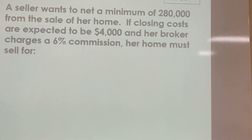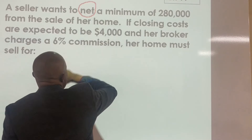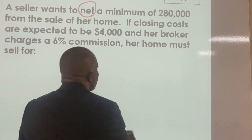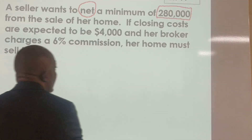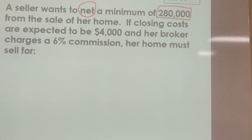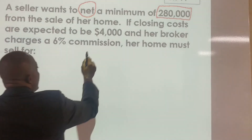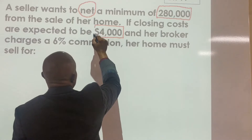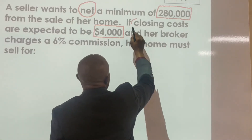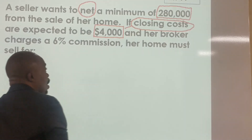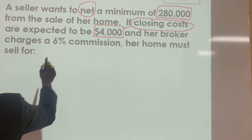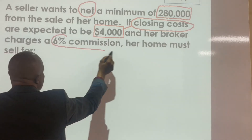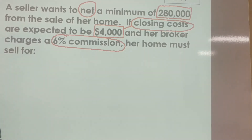So let's identify what's going on here. A seller wants to net — so she wants, after everything is paid, a minimum of $280,000. She knows she's going to pay $4,000 in closing costs. And her broker charges 6% commission, so all of that has to be taken into account.